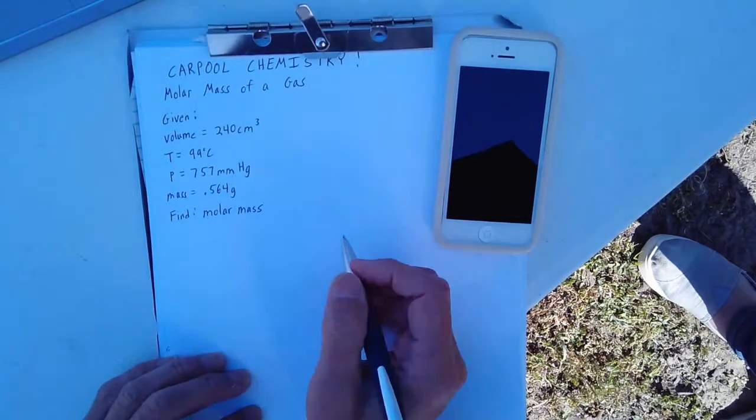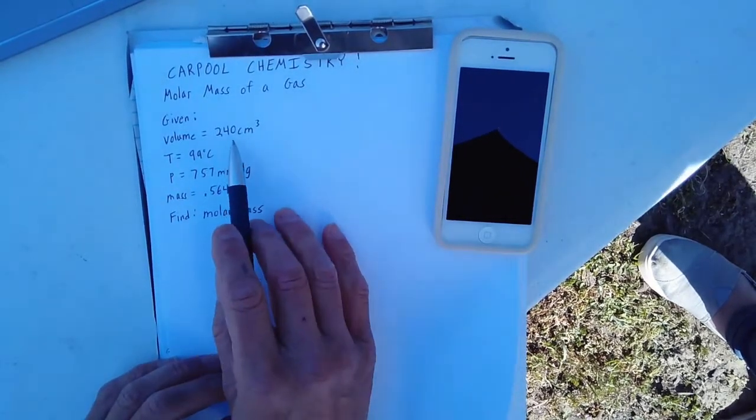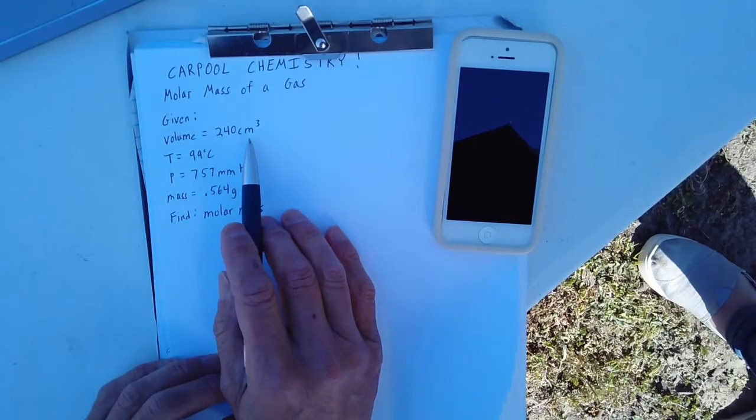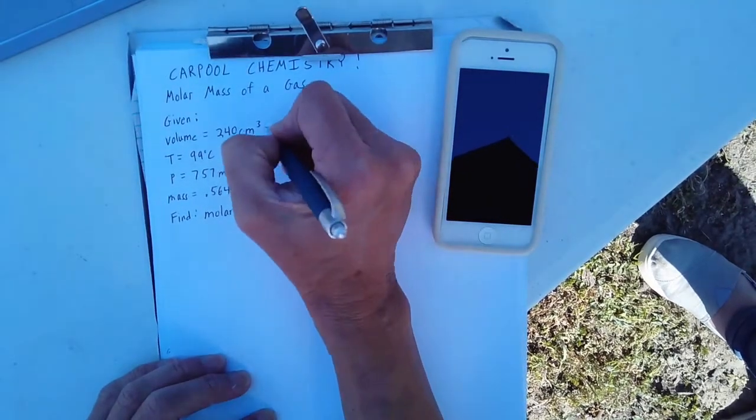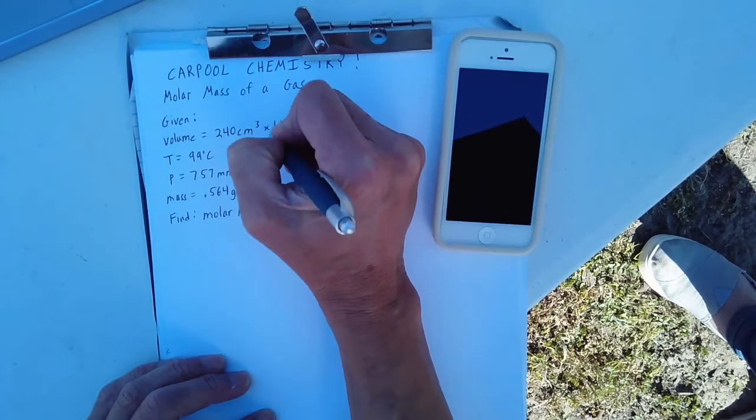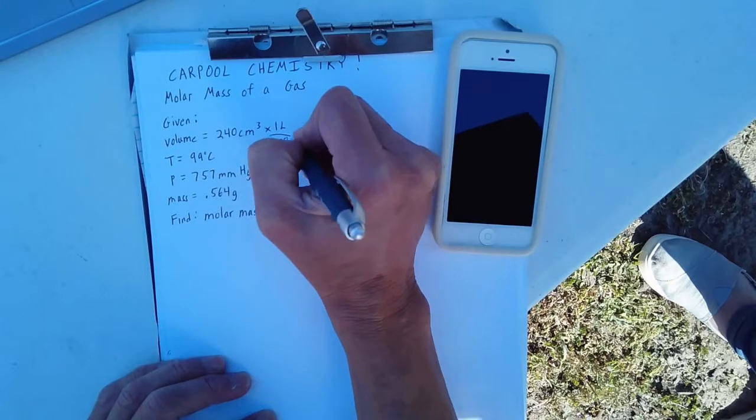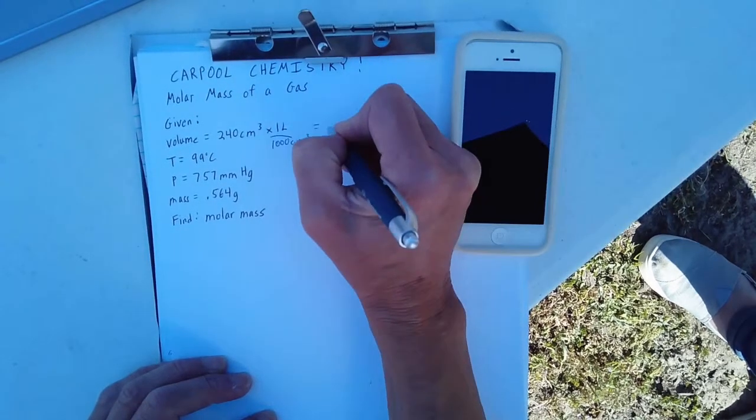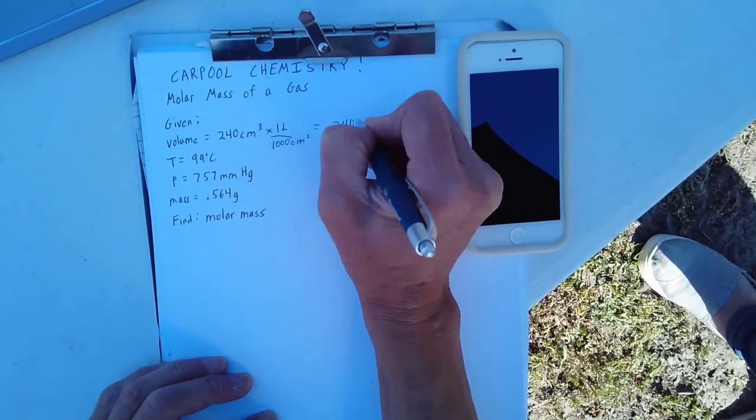Let's say you're given a gas that has a volume of 240 centimeters cubed. Right away, we know that we have to convert that to liters, and so we use one liter for every 1000 centimeters cubed, giving us 0.240 liters.